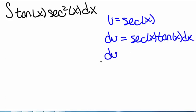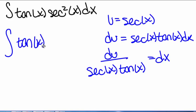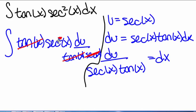So du divided by secant of x tangent of x equals dx. We have the integral of tangent of x times secant squared of x, and dx is du divided by tangent of x times secant of x. The tangent of x terms cancel, and the secant of x cancels with one of the secant squared of x terms, leaving us with the integral of secant of x du.